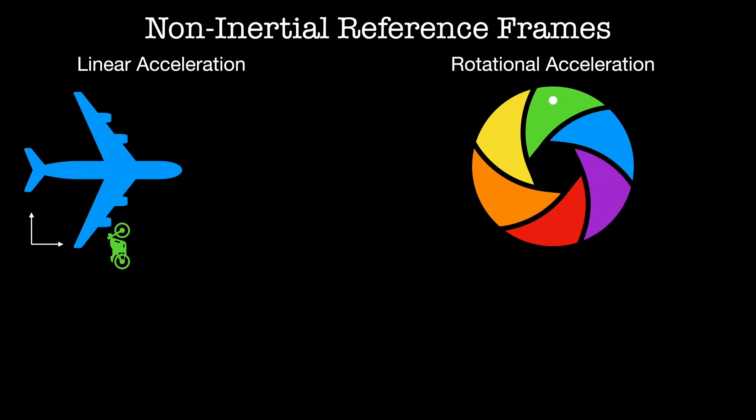In this video, we'll look at physics in non-inertial reference frames. Non-inertial reference frames happen when a reference frame is itself accelerating. We'll look at two cases: first, when the reference frame is accelerating linearly, and second, when the reference frame is rotating.